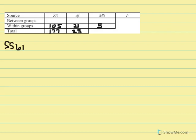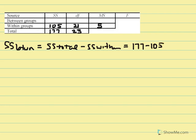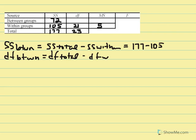SS between can be found by looking at the difference between SS total and subtracting SS within: 177 minus 105 equals 72. Then to calculate DF between, we take DF total minus DF within: 23 minus 21 equals 2.